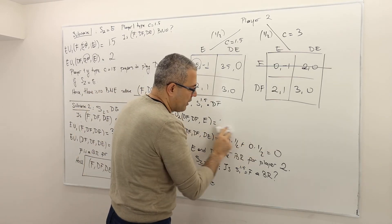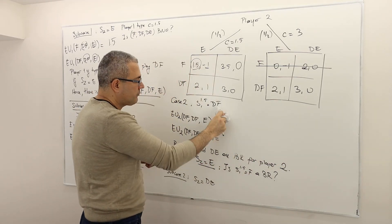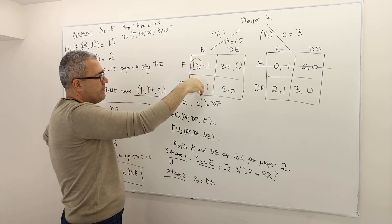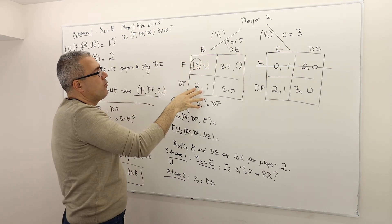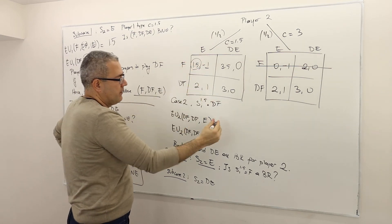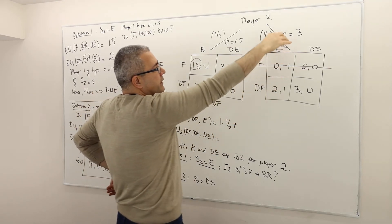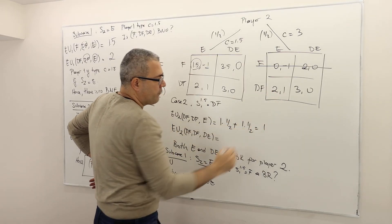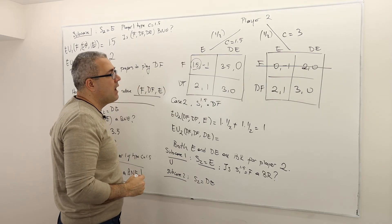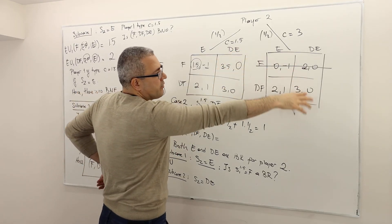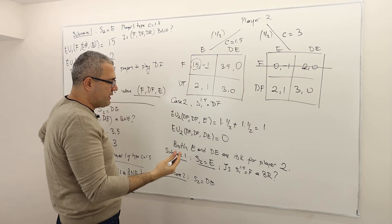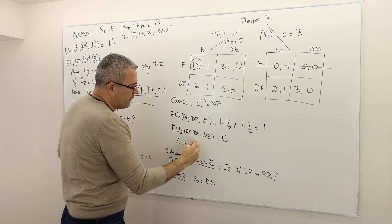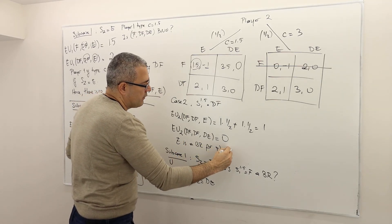So if this is the case, obviously those numbers will change. If I play as player 2 and I play E and my opponent is playing DF here, my payoff is 1 — so 1 times one-half plus, if I play E in this game and my opponent is playing DF, I'm going to get another 1. So therefore my expected payoff is 1. However, if I play don't enter, I'm going to get 0.